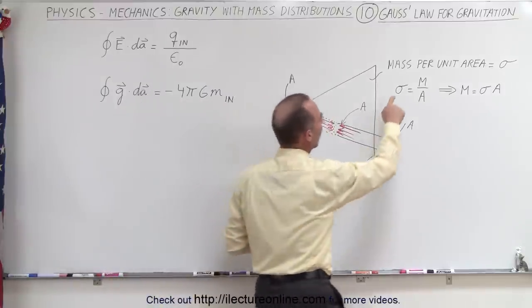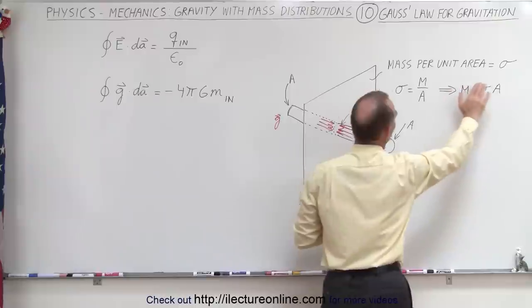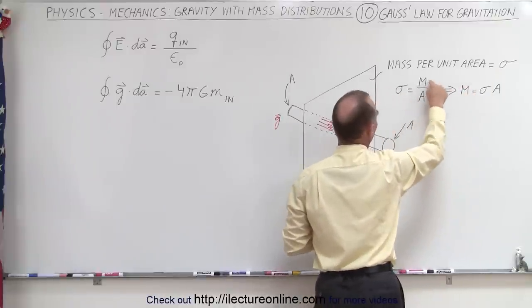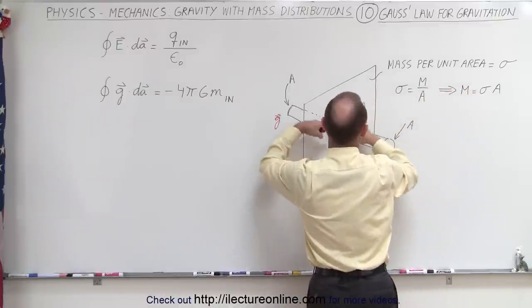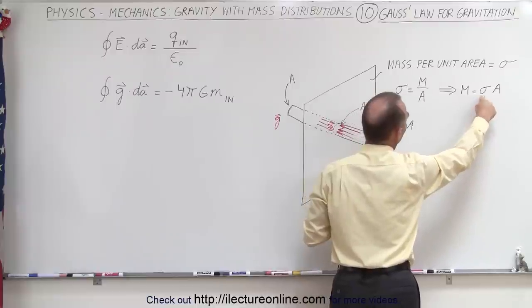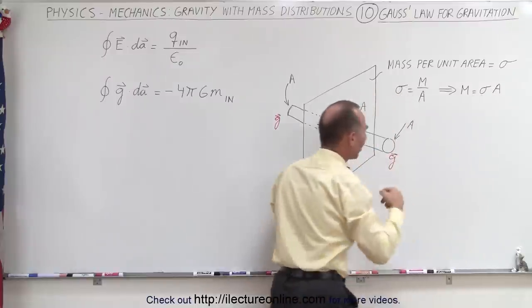Notice that we call the mass per unit area of the sheet equal to σ. Sigma is therefore the mass divided by the area, or the mass of any cutout area is equal to the mass density times the area of that cutout.